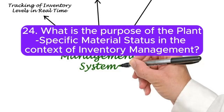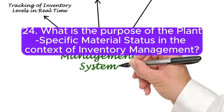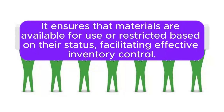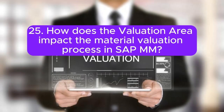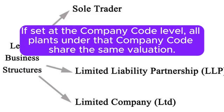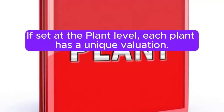Question 24: What is the purpose of the plant-specific material status in the context of inventory management? In inventory management, the plant-specific material status controls the usability of materials. It ensures that materials are available for use or restricted based on their status, facilitating effective inventory control. Question 25: How does the valuation area impact the material valuation process in SAP MM? The valuation area determines at which level material valuation occurs. If set at the company code level, all plants under that company code share the same valuation. If set at the plant level, each plant has a unique valuation.